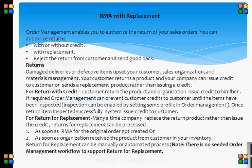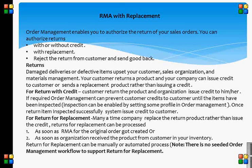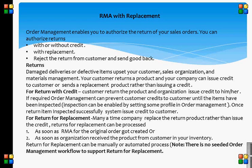RMA with Replacement. Order management enables you to authorize the return of your sales orders. You can authorize returns with or without credit, with replacement, or reject the return from the customer and send goods back. Returns are the damaged deliveries or defective items that upset the customer, sales organization, and material management. Your customer returns a product and your company can issue credit to the customer or send a replacement product rather than issuing a credit.